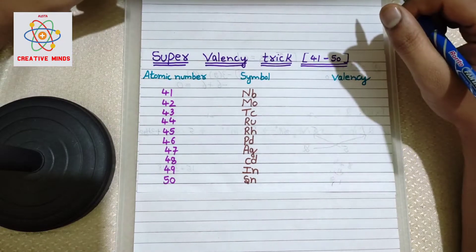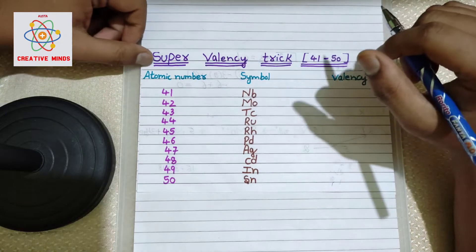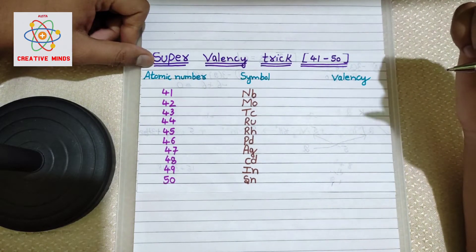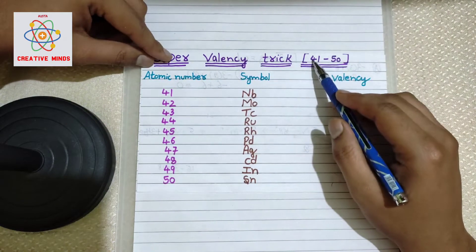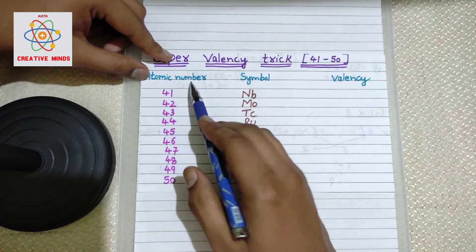Hello students, welcome you all once again to this wonderful series where we are going to learn some coolest tricks to remember the valences of the elements. In this video, we are going to learn some super tricks to remember the valences of element number 41 to 50. Here I have written the atomic numbers from 41 to 50.